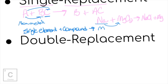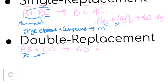Now let's look at double replacement — single and double replacement are like cousins, not opposites. Single replacement: one thing is replaced. Double replacement: two things are replaced. The general formula is AB + CD → AD + CB. Metals replace metals, non-metals replace non-metals, so A and C just switch places. A gets with D, and C gets with B. Metals always come first, so when C and B come together, C comes first because it's the metal. Two things switched places — double replacement.